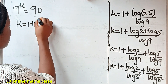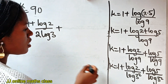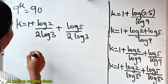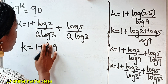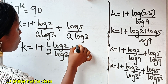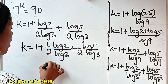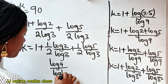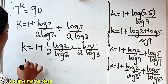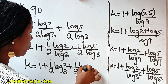So we have K is equal to 1 plus log 2 divided by 2 log 3, plus log 5 divided by 2 log 3. This can be written as K is equal to 1 plus one-half multiplied by log 2 divided by log 3, plus one-half multiplied by log 5 divided by log 3. Remember that when you have log A over log B, it is equal to log A base B. So we write this as K is equal to 1 plus one-half log₃2 plus one-half log₃5.